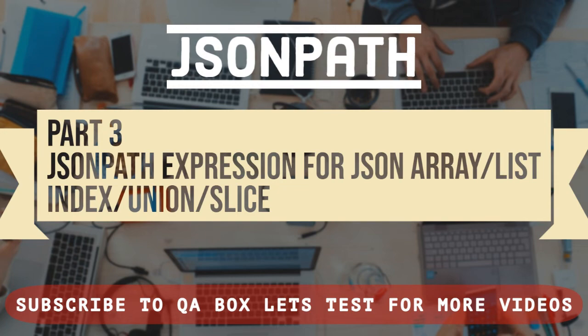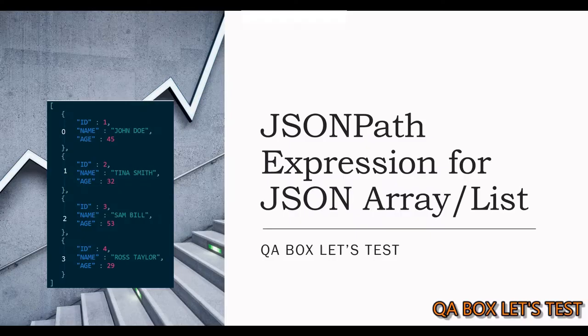Hey guys, in this video we will learn to write JSON path expressions for accessing nodes of a JSON array, which is also called a JSON list. A JSON array contains 0, 1, or more ordered items separated by a comma. It is surrounded by square brackets and is 0-terminated, meaning the first index of the array is 0.